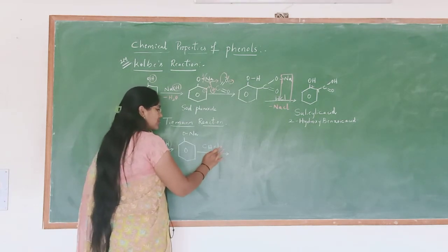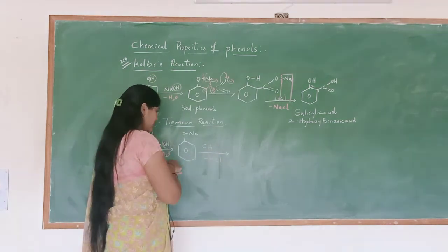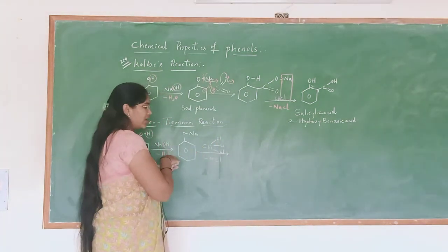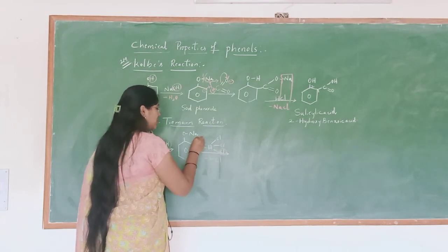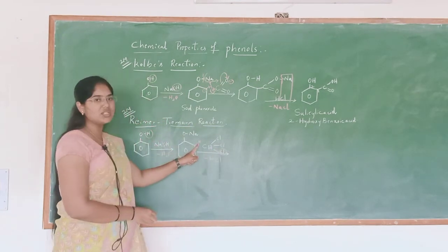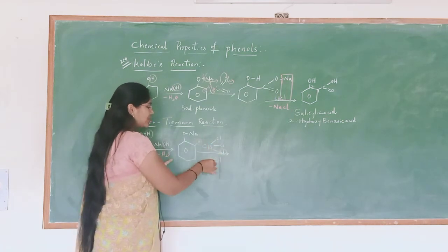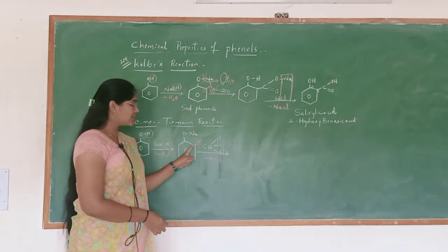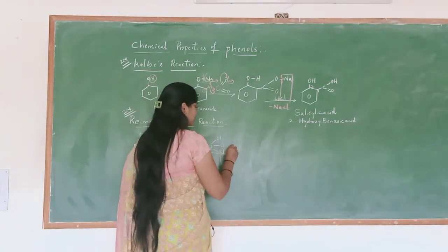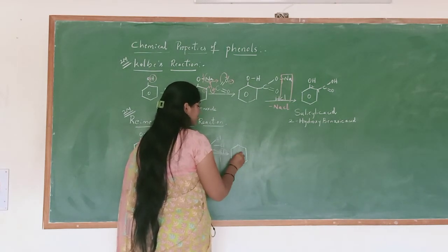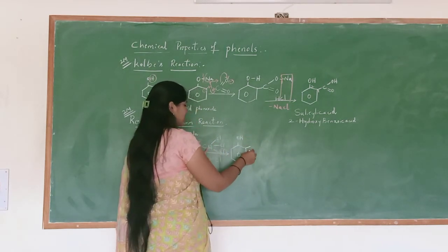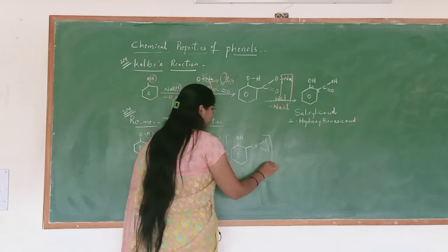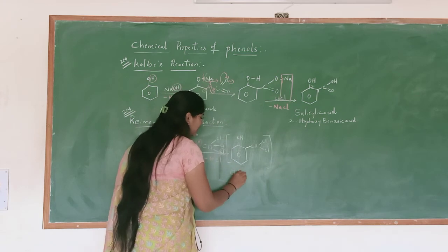CHCl3 chloroform contains three chlorine atoms. Among three chlorine atoms, one chlorine and one hydrogen from the ortho position together eliminate as HCl. Now what remains is CHCl2. The CHCl2 is added to the ortho carbon. The CHCl2 is an intermediate known as dichlorocarbene.